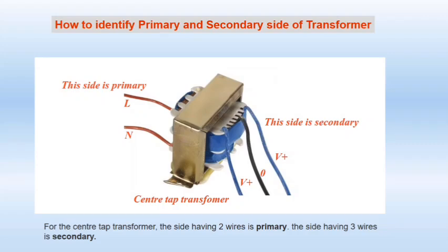Let's see how we can identify the primary and secondary side of a transformer. As you can see in this diagram, if we have two wires on one side and more than two wires on the other side, the side having two wires is primary and the other side is secondary.